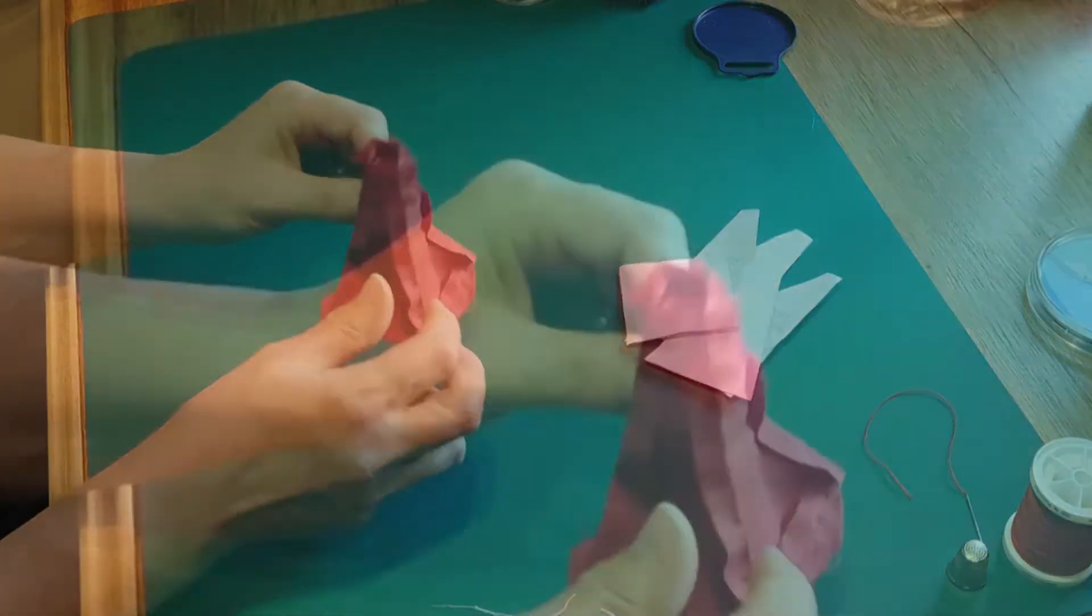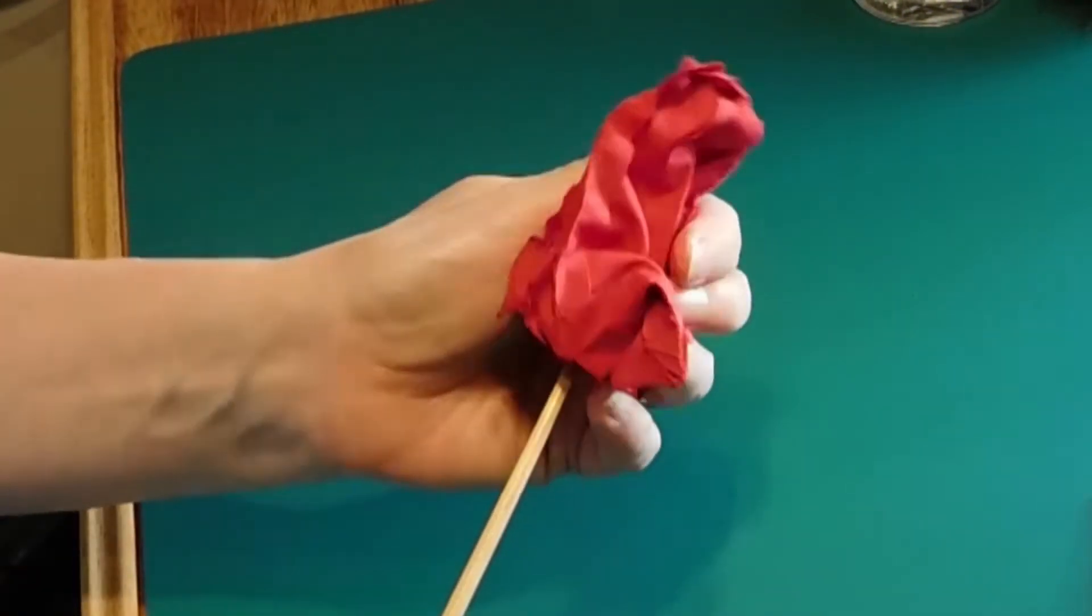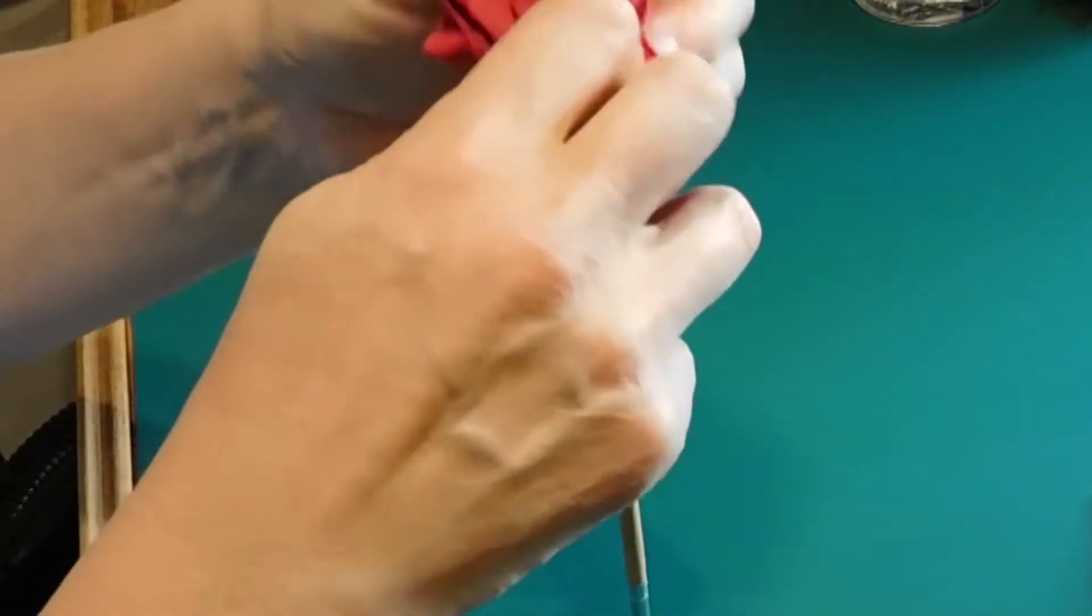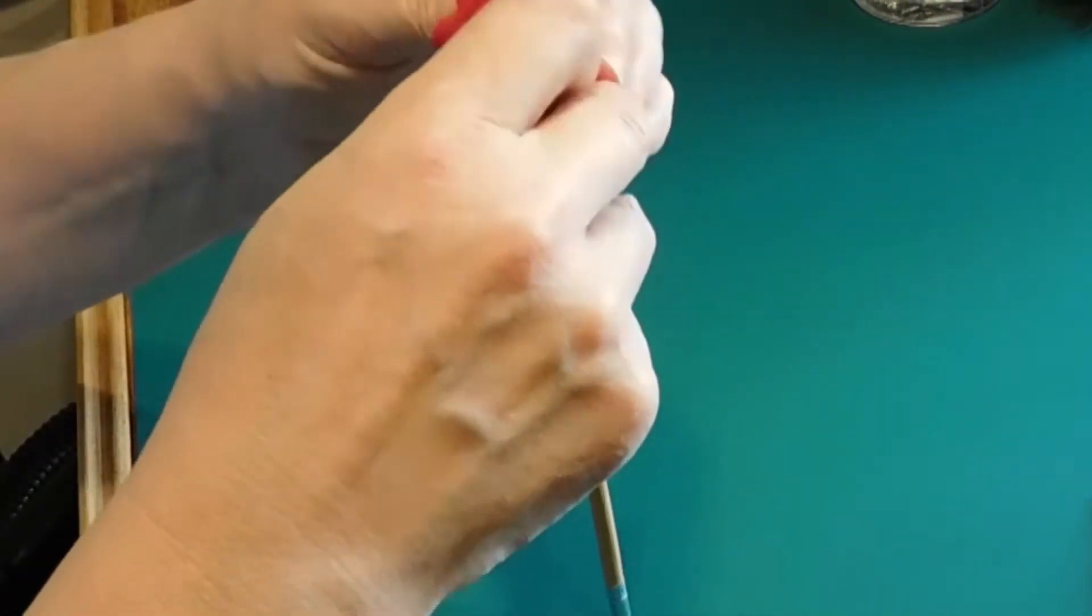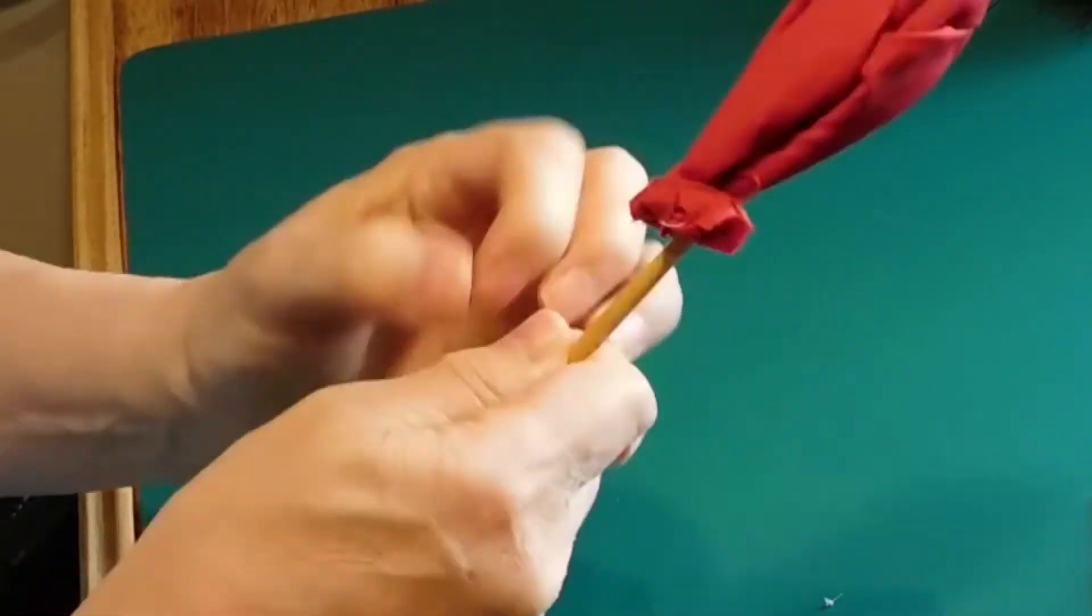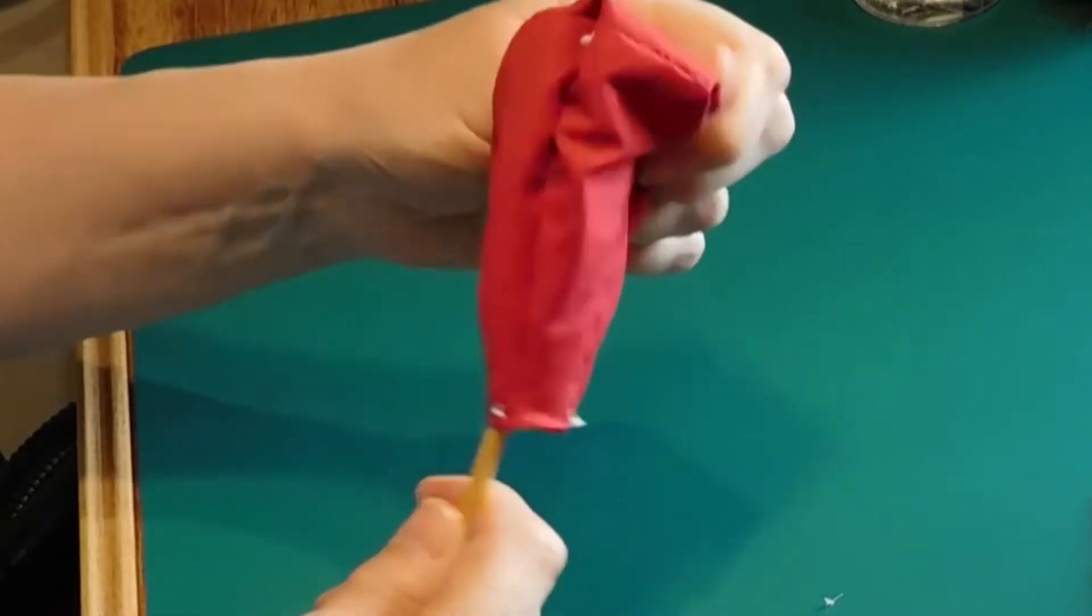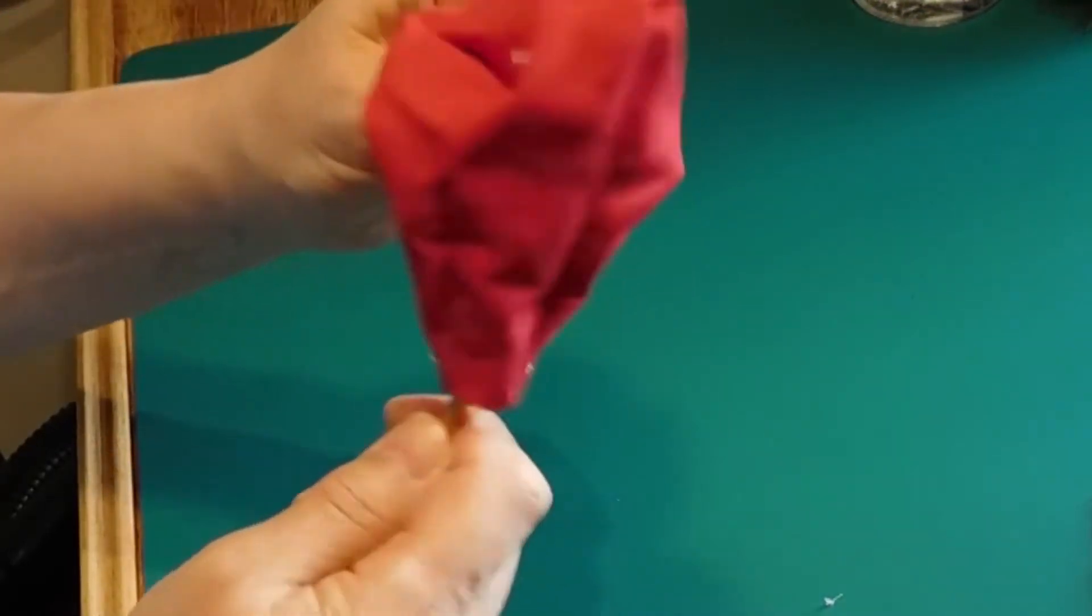This is tricky as the neck of the gnome is quite small. I find it helps to use the end of one of my thin paintbrushes to push the fabric from the base up through the neck, and once that's done, ease out the corners of the base. You could use a chopstick or similar to achieve the same result.